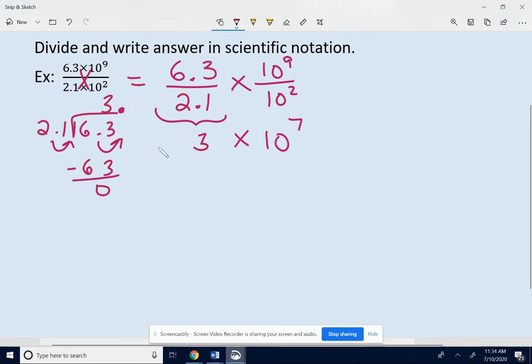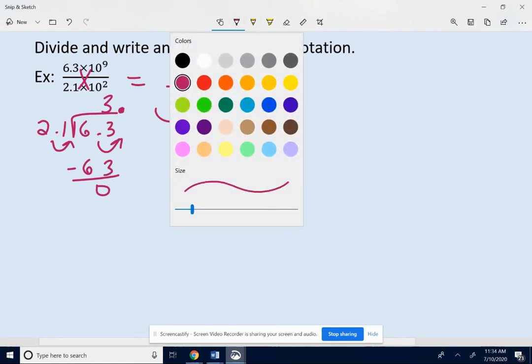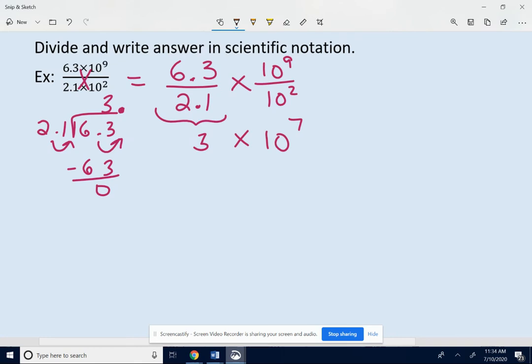The long way to do it. I don't recommend you do it this way, but I know that some people feel more comfortable doing it without the shortcut. 6.3 times 10 to the 9th: start with 6.3, move the decimal 9 over to the right. So we will end up with 8 zeros. Divide that by 2.1 times 10 to the 2nd. Move the decimal 2 to the right, you get 210.